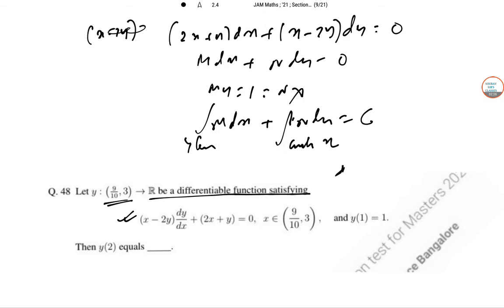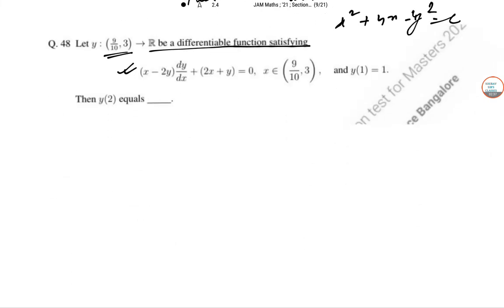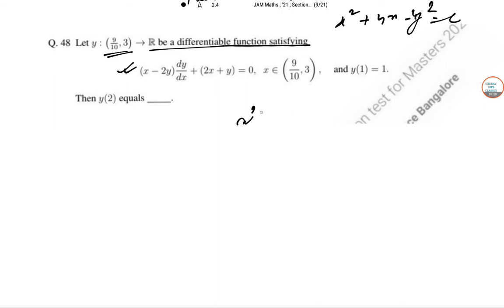So this is directly x² + xy - y² = c. So once this has been done, at (1,1), we find c.